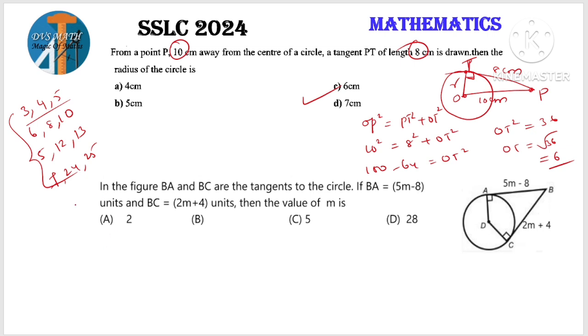In the figure BA and BC are tangents to a circle. If BA is 5m minus 8 units and BC is 2m plus 4 units, then find the value of m. By the second theorem, tangents drawn from an external point are equal, so BA equals BC. 5m minus 8 equals 2m plus 4. 5m minus 2m equals 4 plus 8. 3m equals 12. m equals 4. So option B.